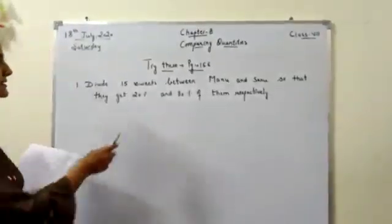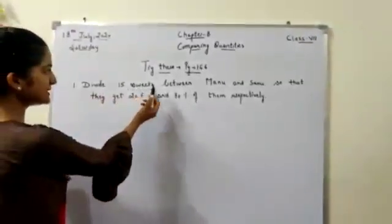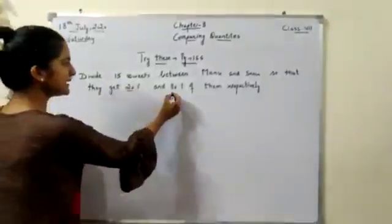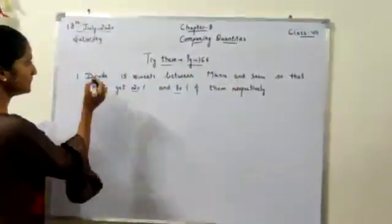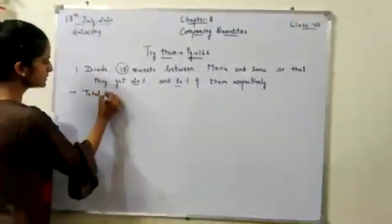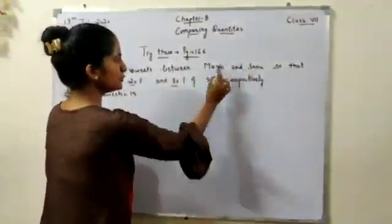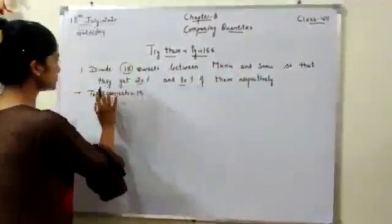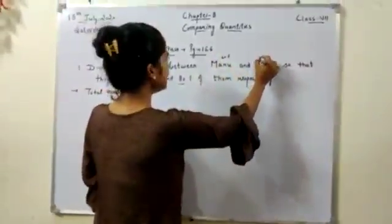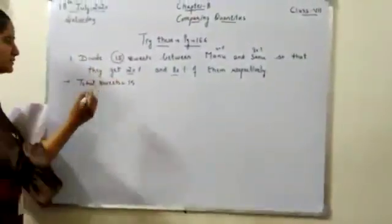So students, now we will discuss the triads. Sum number 1 is: divide 15 sweets between Manu and Sanu so that they get 20% and 80% of them respectively. Total sweets are 15, divided between two boys Manu and Sanu, so that Manu will get 20% of total sweets and Sanu will get 80% of total sweets. Now we have to find the exact numbers, so let's start.